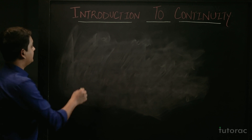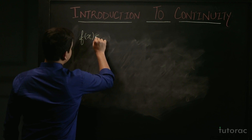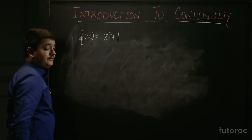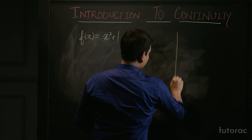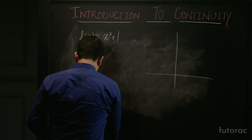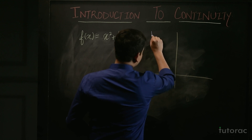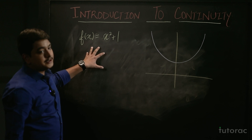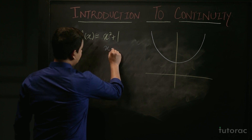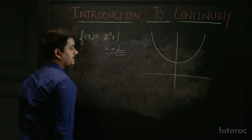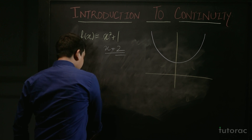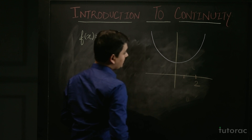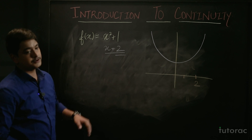Let us take the function f(x) = x² + 1. The graph for this function would be a parabola whose vertex is at y = 1. Now we have to check the continuity of that function at x = 2. The point x = 2 would be somewhere on this parabola, and we have to check whether the function is continuous or not at x = 2.